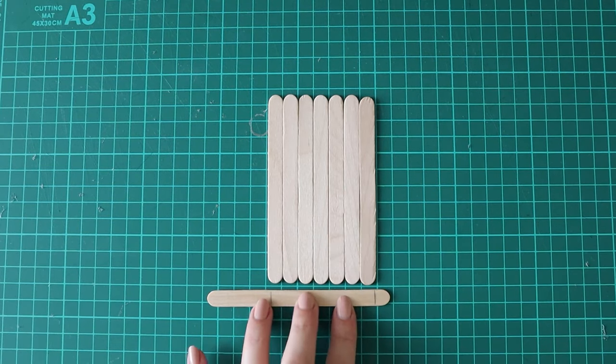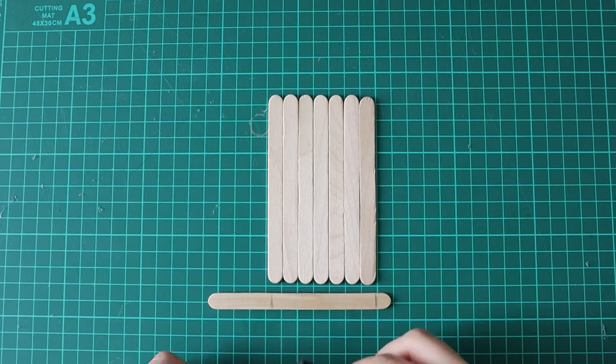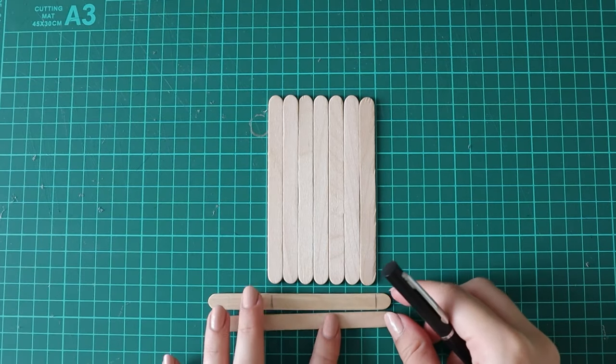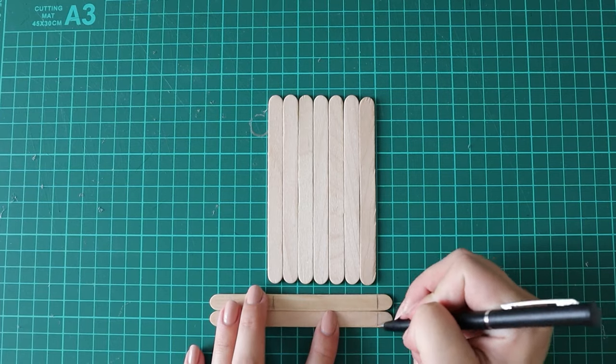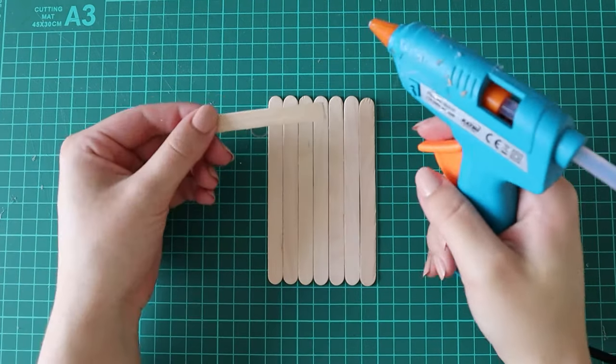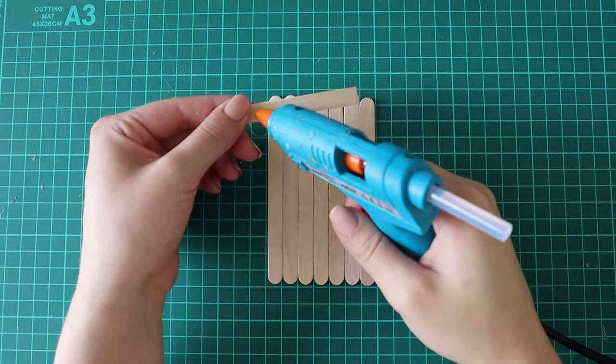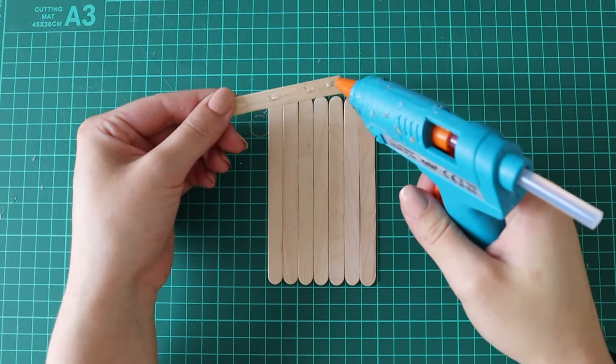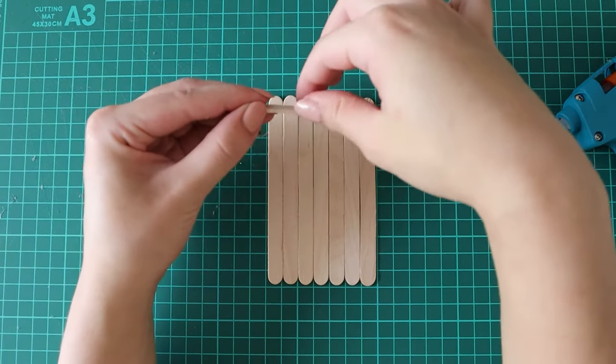I'm taking seven popsicle sticks and cutting down two sticks to fit the width of the seven, then gluing these across to secure them together. I'm not sure why seven sticks always seems to be the perfect width for things like this, because I used seven for the top of my picnic bench too. It just seems to be the way.